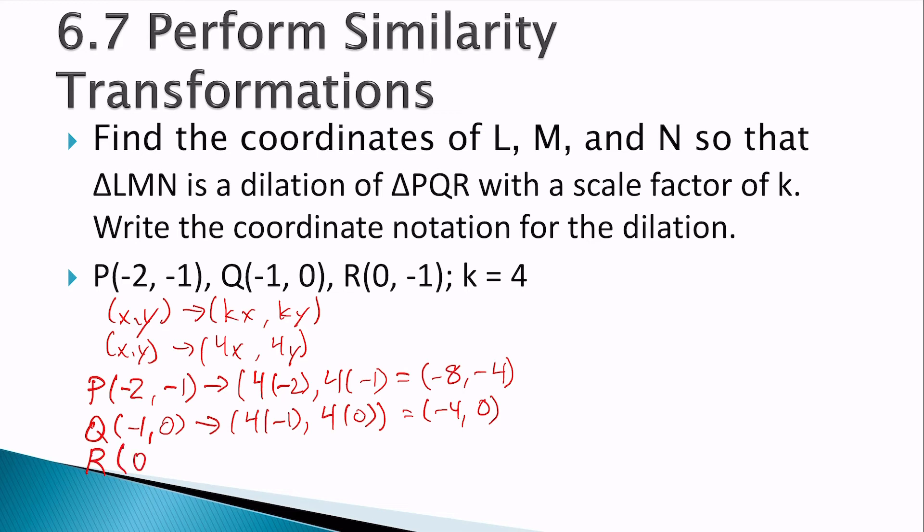R was 0, negative 1. I'm going to multiply that by 4. So it would be 4 times 0, 4 times negative 1, which gives us 0, negative 4.